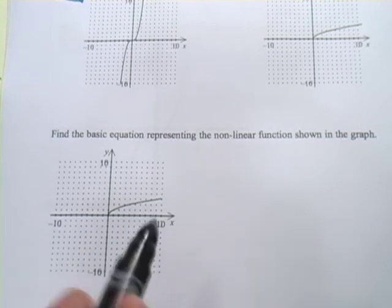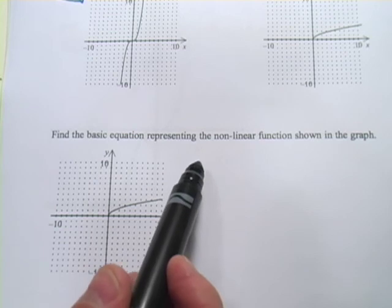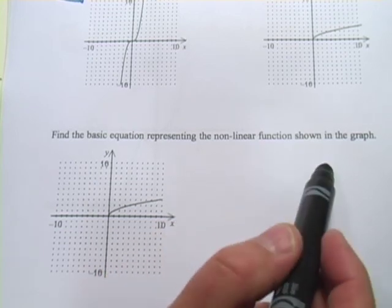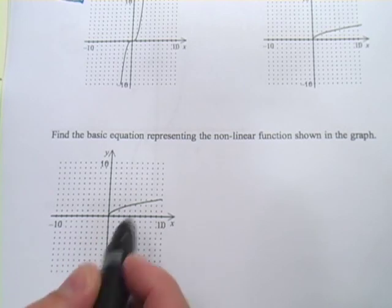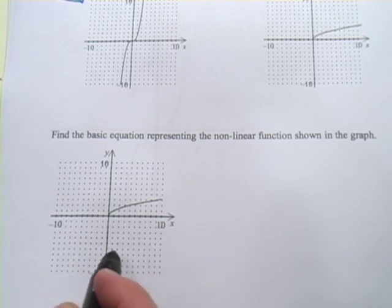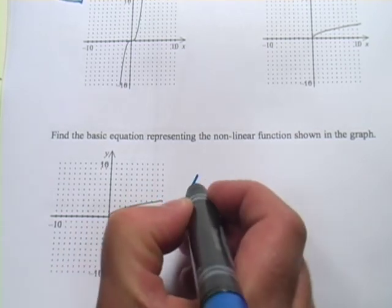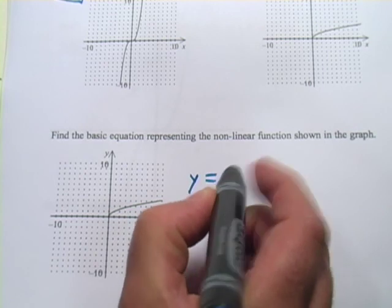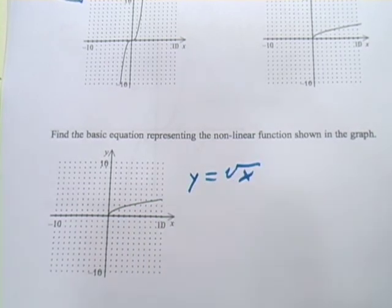All right, and one more here. This one says, find the basic equation representing the nonlinear function shown in the graph. And we've got this gently sloping thing that stays in the first quadrant. Hopefully, you recognize that as the square root function. And the most basic equation for that function is just going to be Y, or maybe F of X, equals the square root of X. And that would be your answer. So that's a little introduction to some of the basic nonlinear functions.